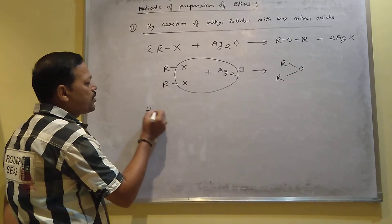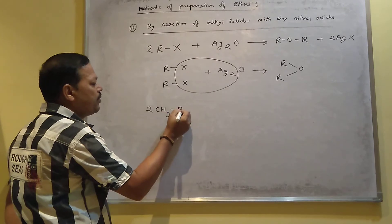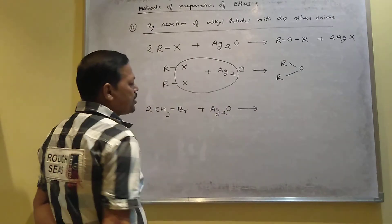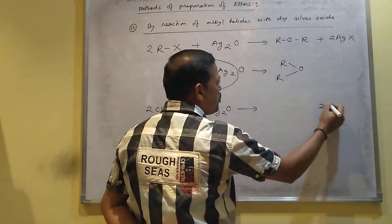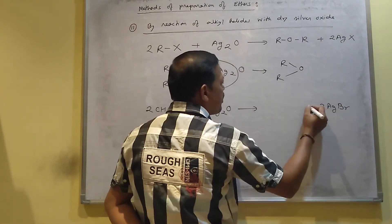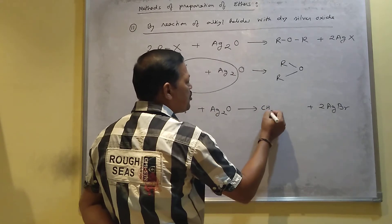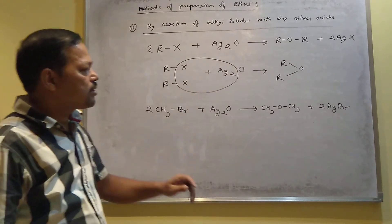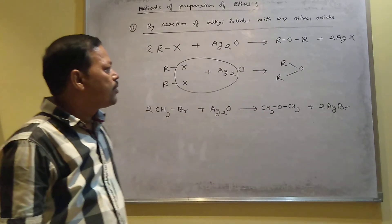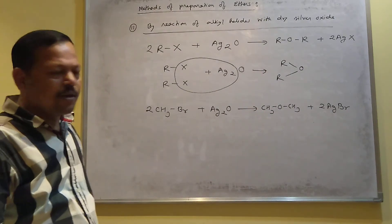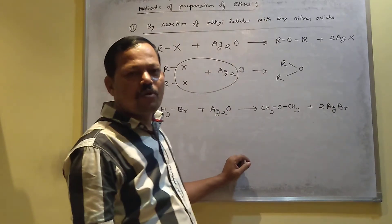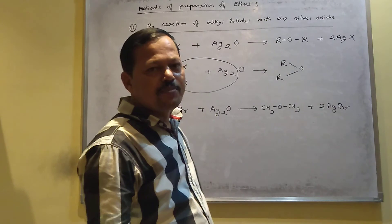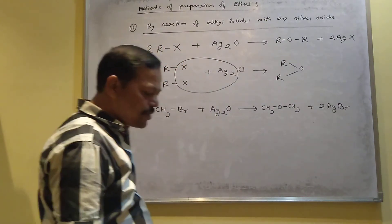For example, when 2 moles of CH₃Br react with silver oxide (Ag₂O), silver combines with bromine to produce 2AgBr as a side product, and the two methyl groups combine with oxygen to produce methoxymethane. However, this reaction has one drawback: you can only prepare symmetrical ethers by this method — unsymmetrical ethers cannot be prepared using silver oxide.